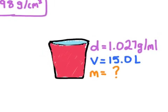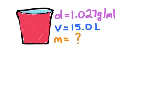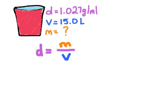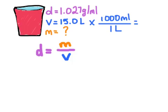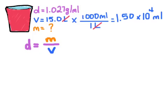The first thing we should do is write down the equation we're going to use. Next, I want to double check that all my units are in SI units, or at least agree with each other. Looking at the units for volume, I can see liters are listed here and milliliters are listed in the density. I need a common unit. Since density is measured in milliliters, I'll convert the 15 liters into milliliters by multiplying by a conversion factor: there are 1,000 milliliters per liter. The liters cancel, leaving us with 1.5 × 10⁴ milliliters, or 15,000 milliliters.